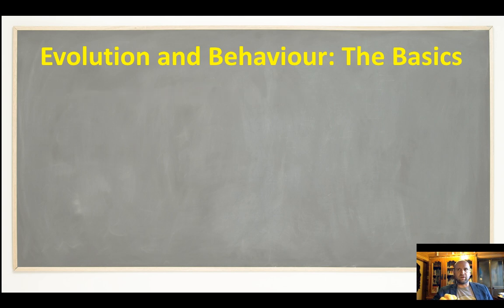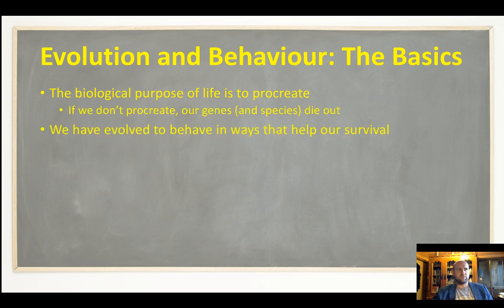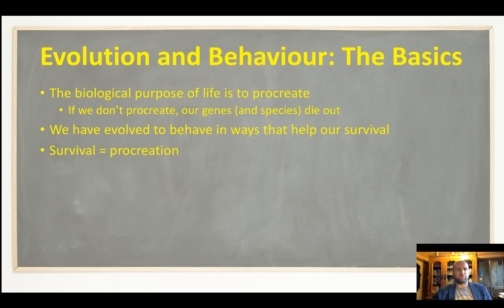Before we begin, the tricky thing with this topic is you can get really biological and really specific, and I think that can make it very complicated. We're going to keep it very simple, and even by keeping it simple you can still write top answers to get a six or a seven. We just have to remember that the biological purpose of life is to procreate — if we don't pass on our genes, life dies out. This is the crux of evolution: we've evolved to behave in ways that help our survival, which means behaving in ways that help us pass on our genes.